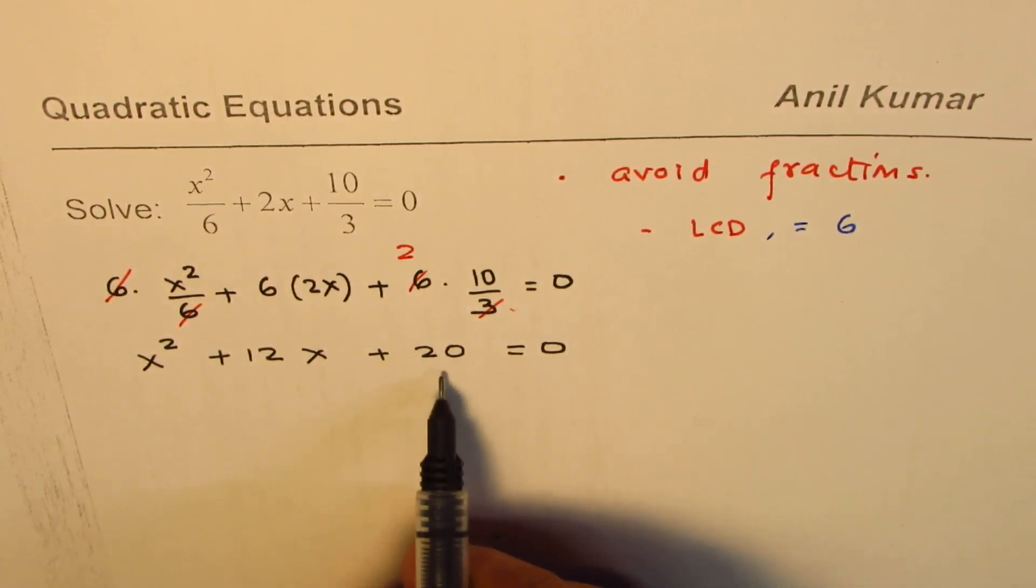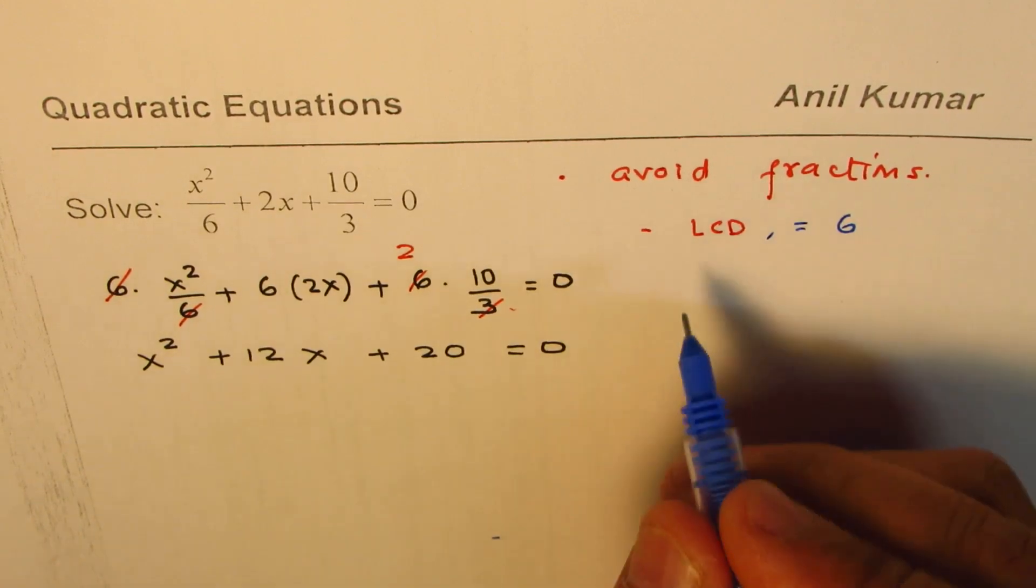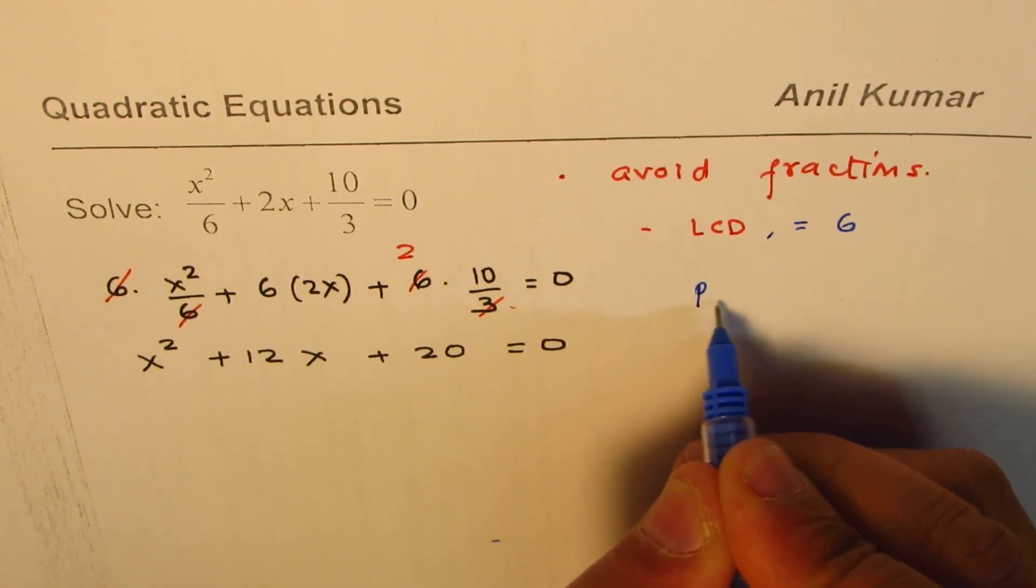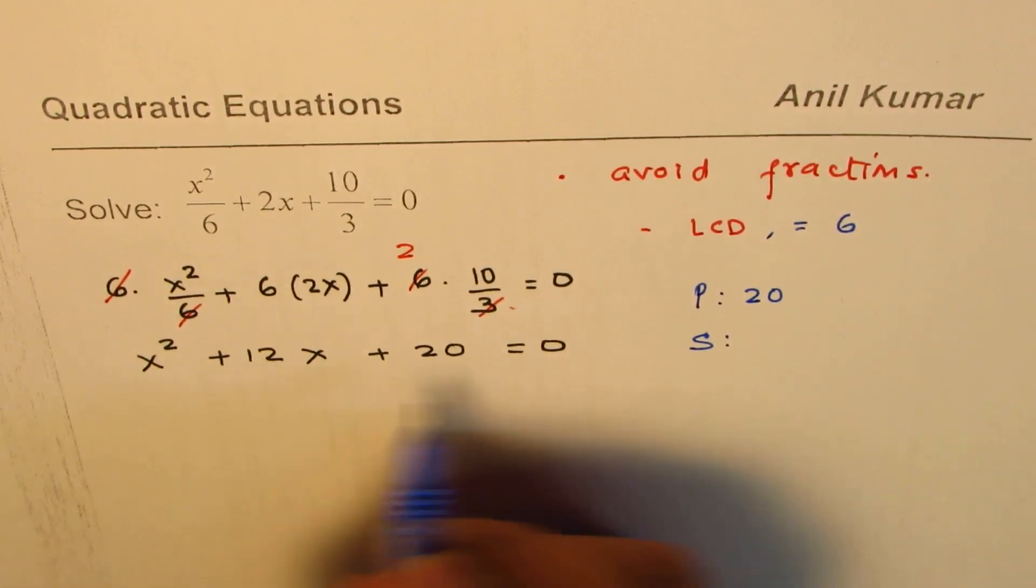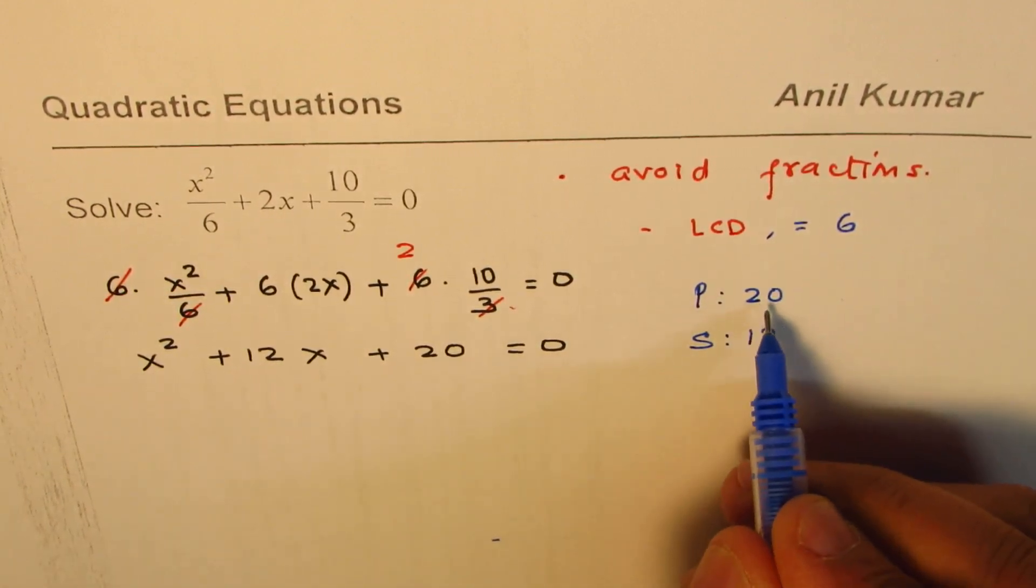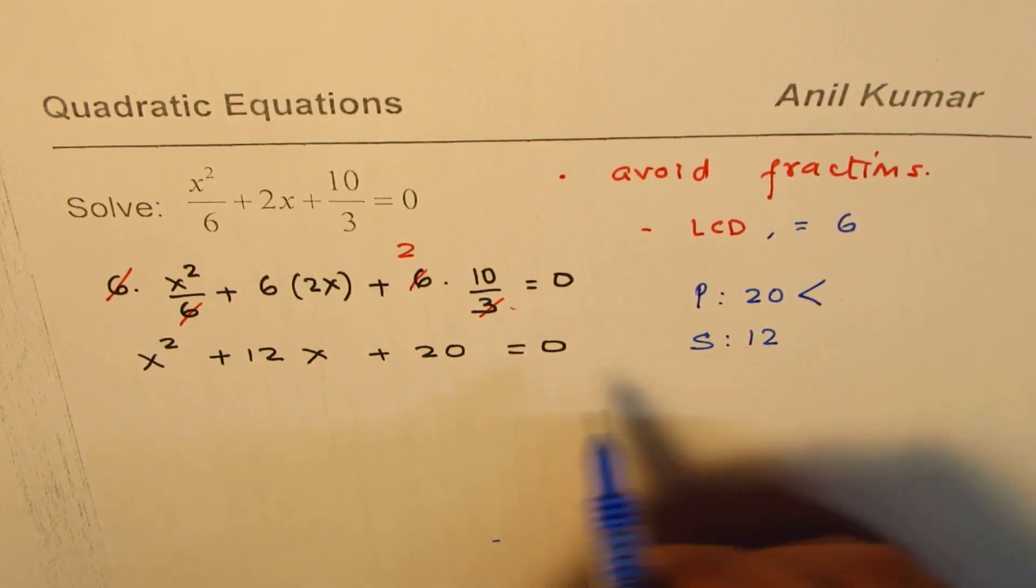Since we have 20 as a product, the strategy here is to find product P, let this be equal to 20. It has to be 20 and sum has to be 12. So we're looking for two numbers whose product is 20 and sum is 12, both plus.